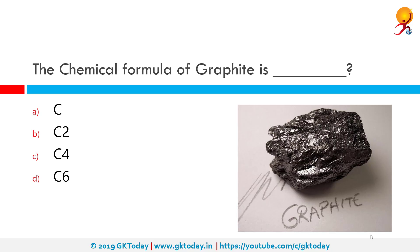The chemical formula for graphite is C. Graphite is essentially just carbon — it is a crystalline structure of the element carbon with its atoms arranged in a hexagonal structure.